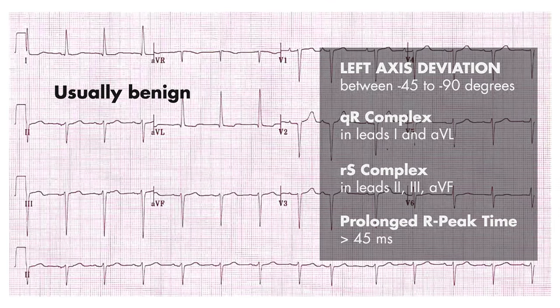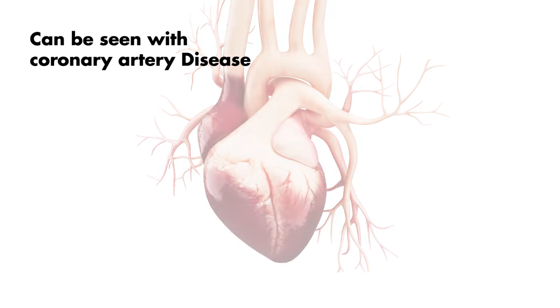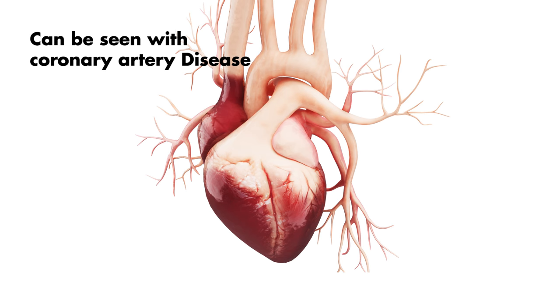However, there is a small subset of patients with this finding on their EKG which is associated with coronary artery disease secondary to the involvement of the left anterior descending artery. This is because the left anterior fascicle can be supplied blood from either the septal branches of the left anterior descending artery or by way of the AV nodal artery.